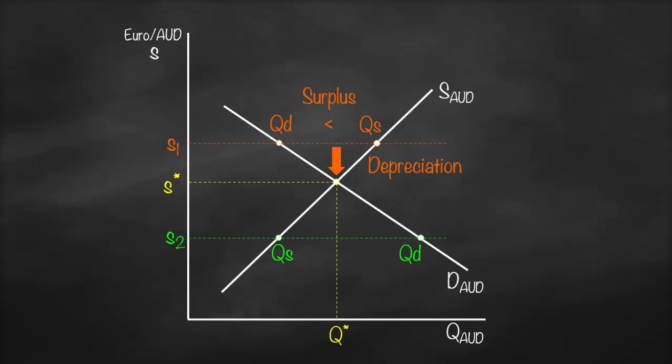As you see here, our quantity demanded is bigger than our quantity supplied, which means that we have a shortage of Australian dollar. So if we have a shortage, the value of the currency will go up, which means that we have appreciation.